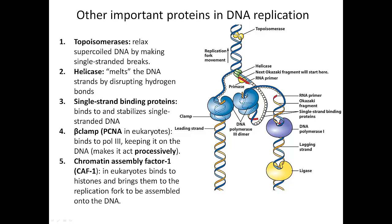Another really important enzyme is helicase, shown here in green. Helicase separates those two strands of DNA by disrupting the hydrogen bonds between the bases. Once those strands are separate and single-stranded, another protein called single-stranded binding protein, shown in white, comes along and stabilizes that single-stranded DNA. Normally it would just want to re-anneal with its complementary strand, but this prevents that from happening.